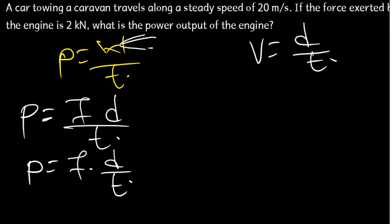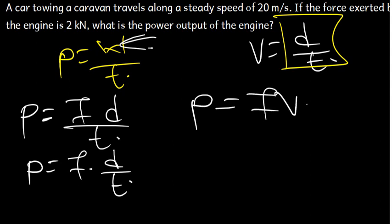So what I'm going to do is where there is D over T, I'm going to replace it with velocity. So we can say that power is equal to force times velocity. This is another formula for finding power.